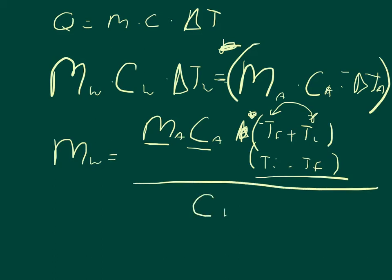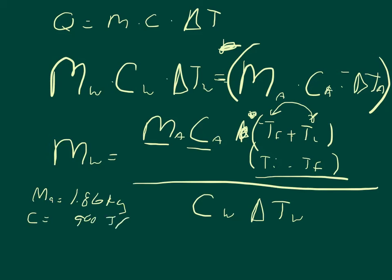The problem gives us the following values. The mass of aluminum is 1.86 kilograms. The specific heat of aluminum from the chart is 900 joules per kilogram per degree Celsius. For the temperature, since we're doing initial minus final, the initial temperature of aluminum was 150 degrees Celsius and the final temperature of aluminum was 59.3 degrees Celsius.